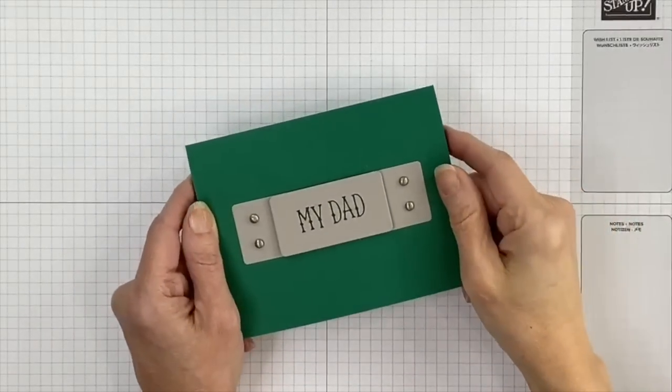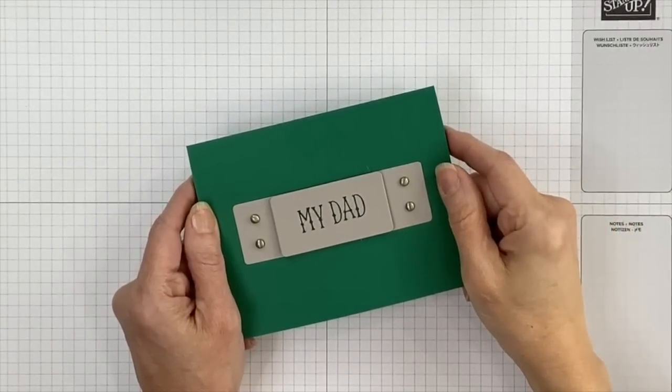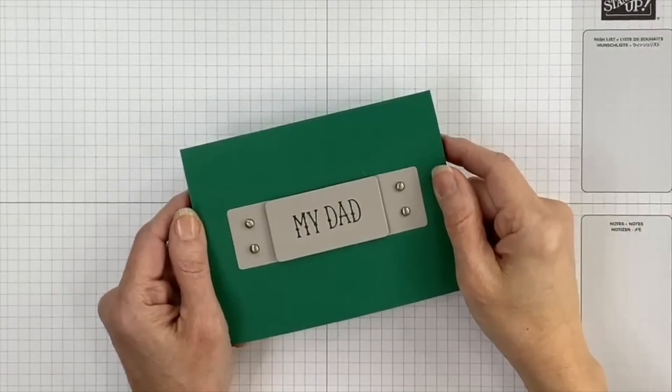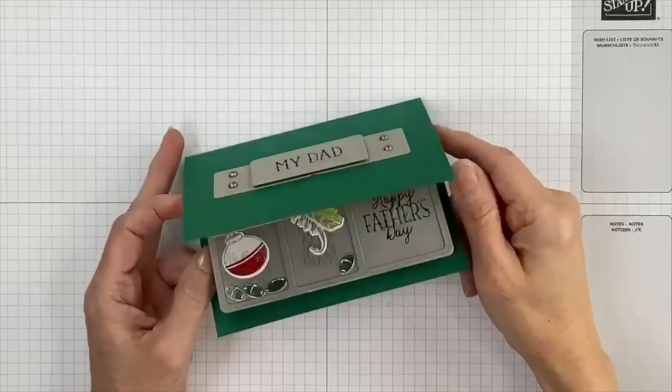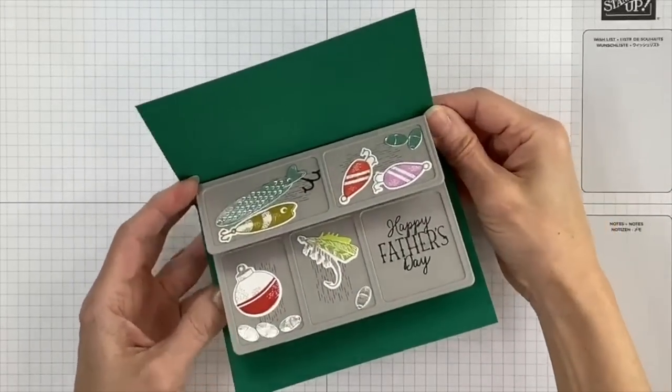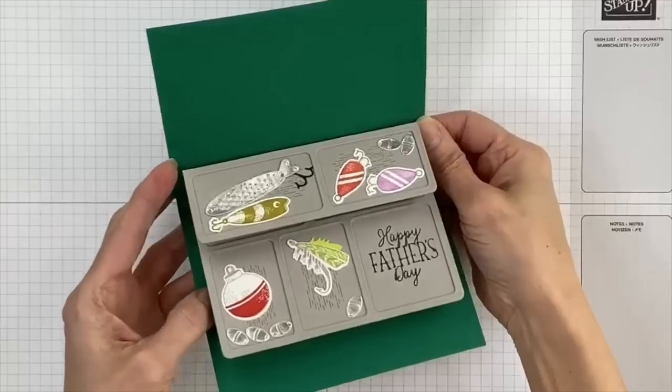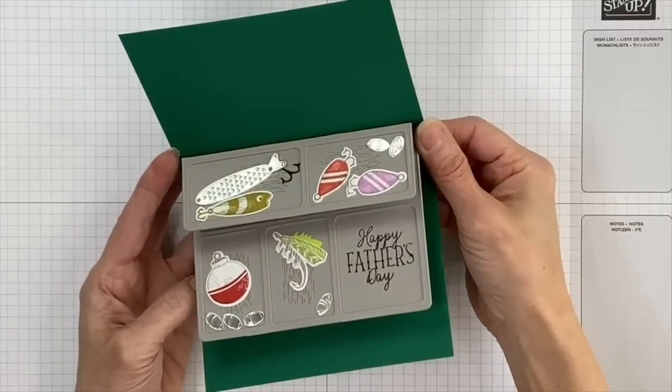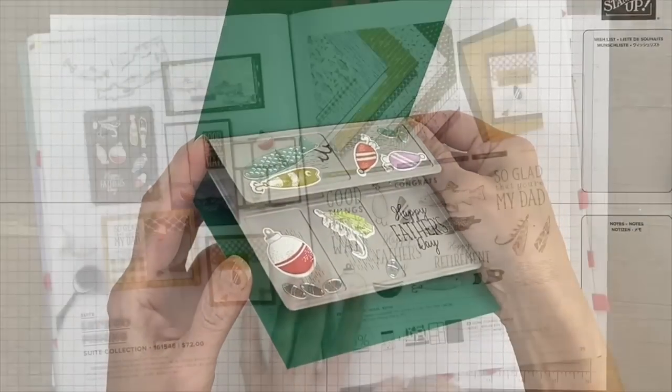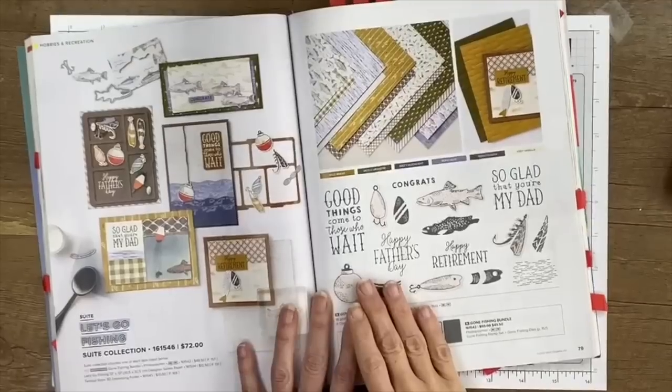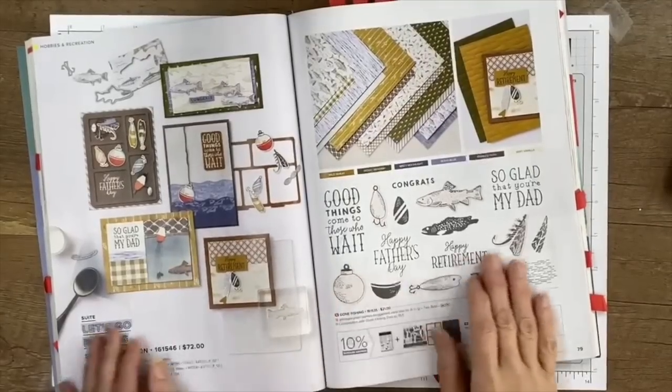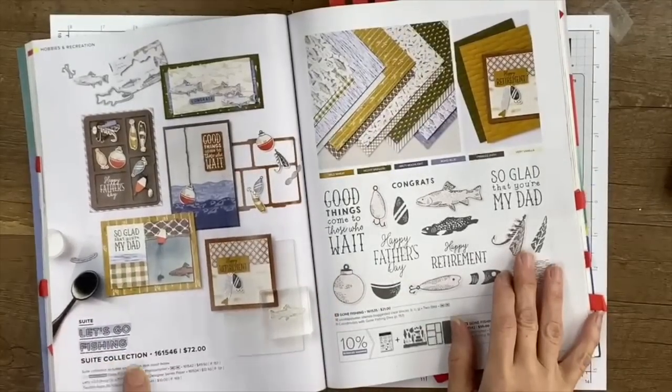Hi, everyone. I'm Rachel Tessman from stampyourartout.com. I'm an independent Stampin' Up! demonstrator from Andover, Minnesota in the U.S., and today I'm bringing you a pre-recorded online paper crafting class where I walk you through the steps of making this Tackle Box card. I'm using products from the Let's Go Fishing Suite found on pages 78 and 79 of the 23-24 annual catalog.